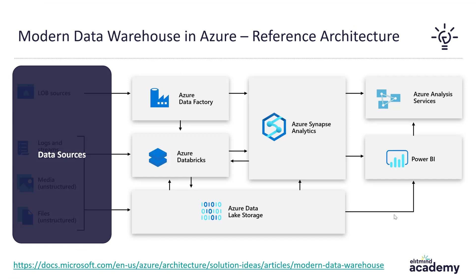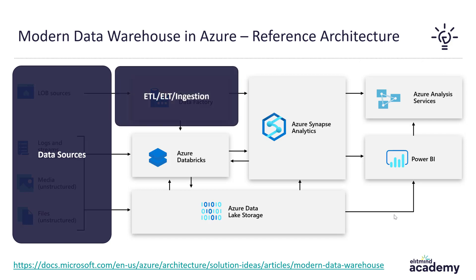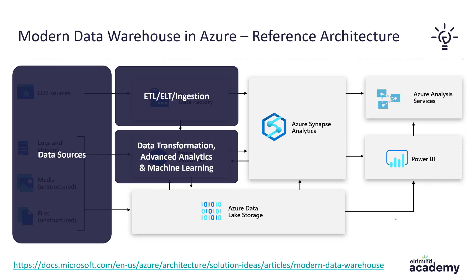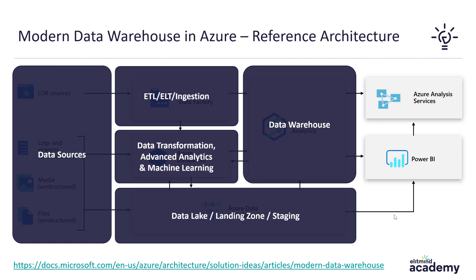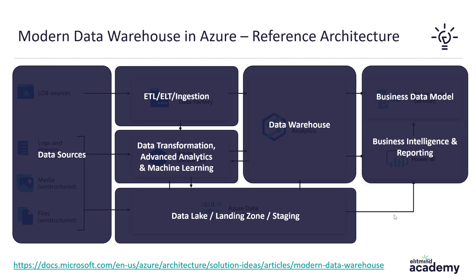Let's summarize this architecture. We start with data sources, which can be different operational systems from your infrastructure — on-premises or cloud. You begin your ELT process — extract, load, and transform — loading this data, possibly using sophisticated transformations and advanced analytics, to the data lake, landing zone, or staging storage, which is cheap storage based on HDFS capabilities. You store your reference corporate data in a data warehouse built on top of Azure Synapse Analytics. You can then build a data model and serve data to business intelligence users using a combination of Azure Analysis Services and Power BI, or just Power BI alone.